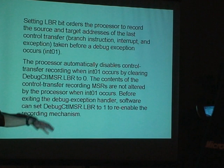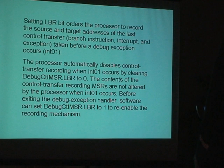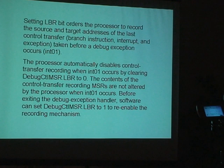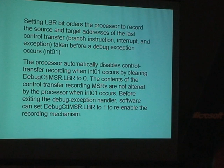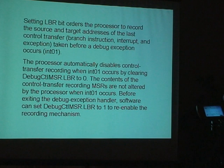Setting bit zero orders the processor to start recording the addresses of branches — jumps, returns, calls, and so on — taken before the debug exception occurs. So it records traces of what happened before the exception. The processor automatically disables this, similar to how it disables the trap flag bit during single stepping. The processor disables control transfer recording when interrupt 1 occurs, preventing instructions inside the interrupt 1 handler from overwriting these records in the machine status registers.